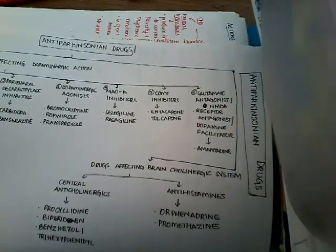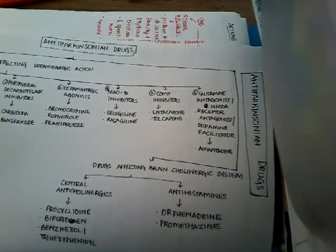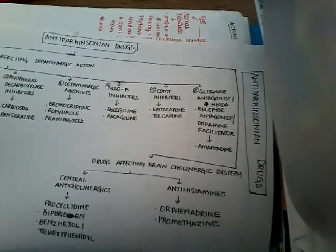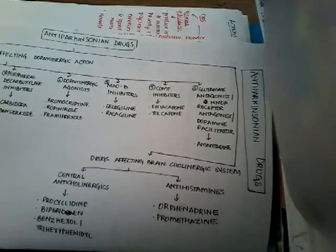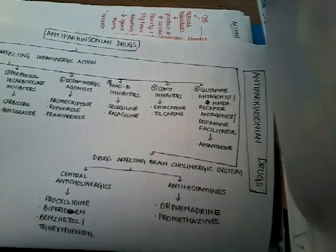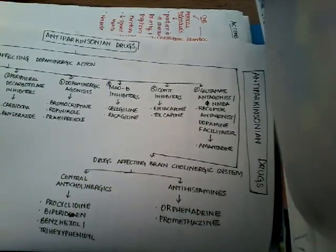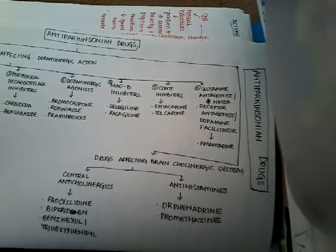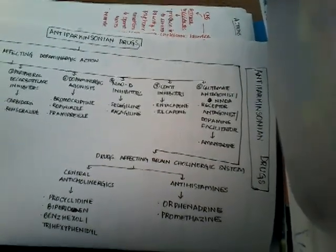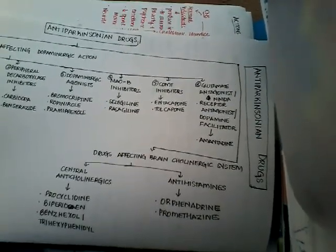The next group is COMT inhibitors, that is catechol-O-methyltransferase inhibitors. These include entacapone and tolcapone. The other pathway of levodopa degradation is through the COMT enzyme. These drugs inhibit catechol-O-methyltransferase and thus increase the availability of levodopa and also dopamine, mainly tolcapone.